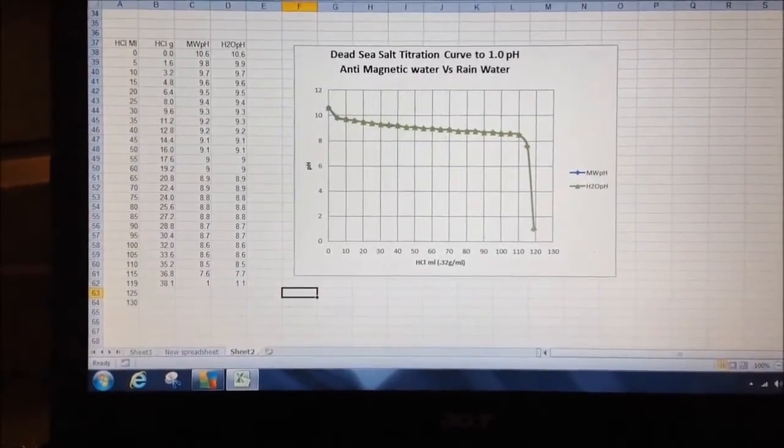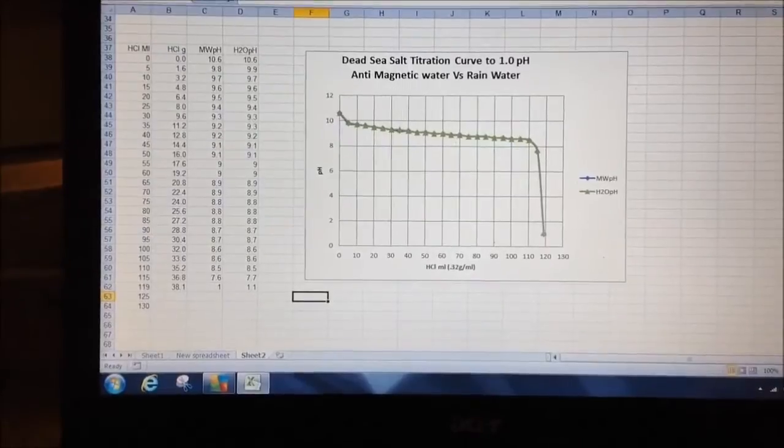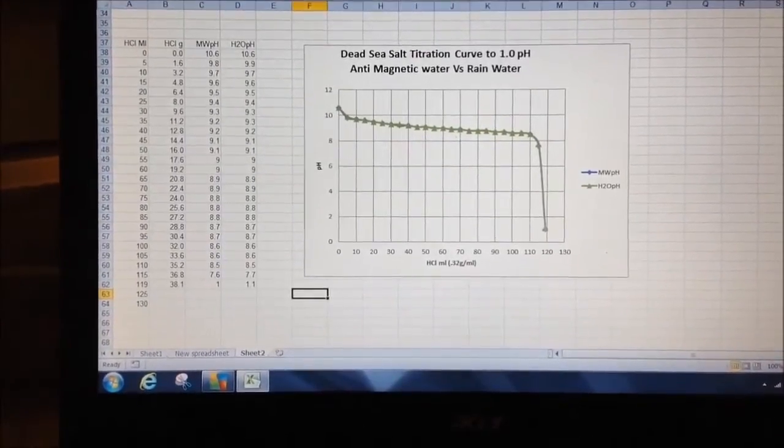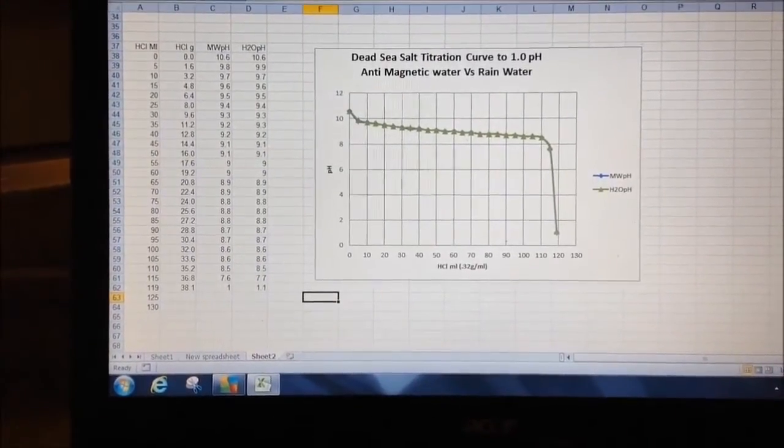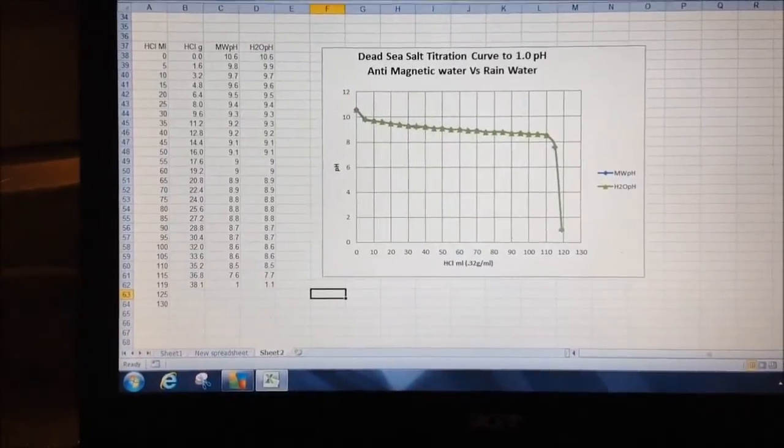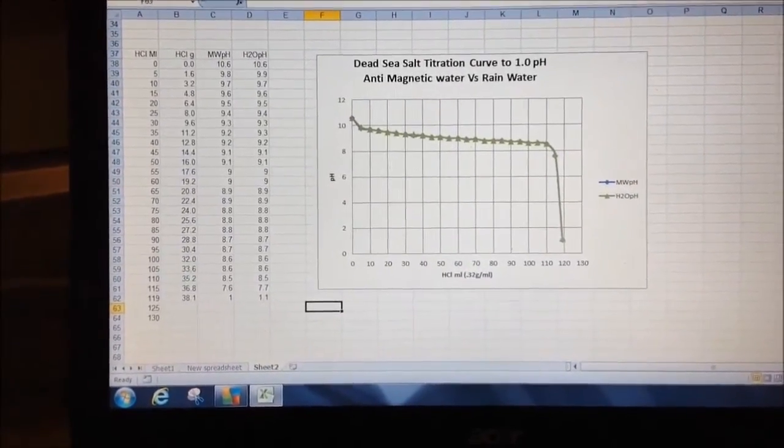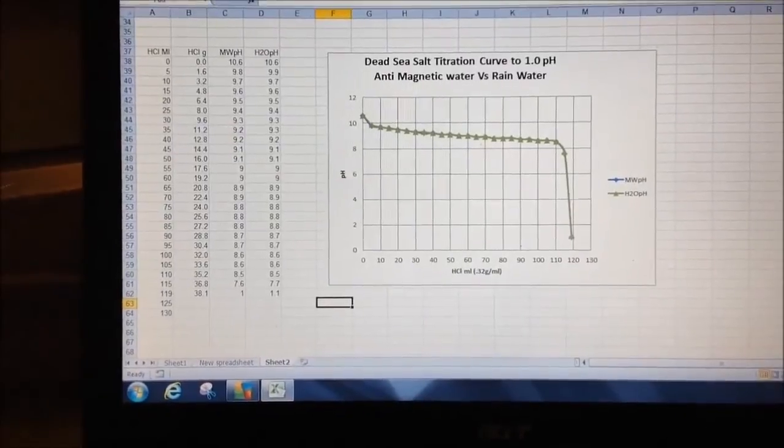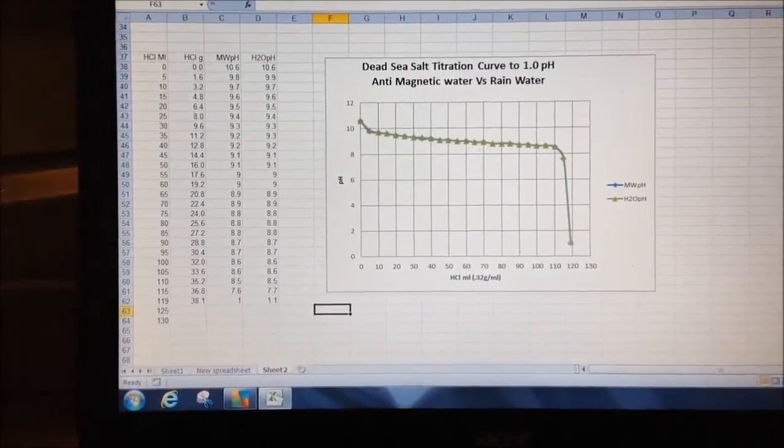There's the titration curve to bring it all back down to one. You can see there it took about nearly 120 ml to bring it down. The reason why there's only one graph is because they're virtually exactly the same and they're overlaid against one another.